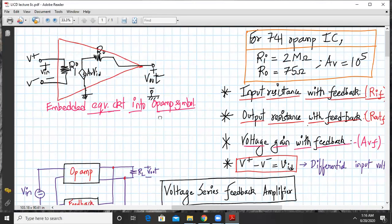For a practical op-amp, we have RI is around 2 mega ohms, RO is around 75 ohms, and AV is around 10 raised to 5. So that's for 741.